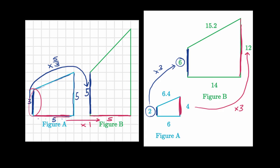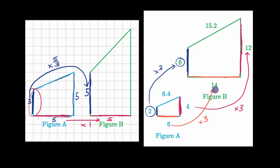Now, this side has length six, and the potentially corresponding side in figure B has length 14. Here we're not multiplying by three. If figure B were a scaled up version of figure A, we would multiply by three — but six times three is 18, not 14. So figure B is not a scaled version of figure A.